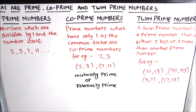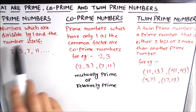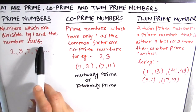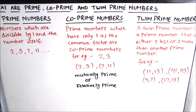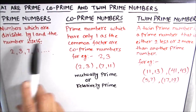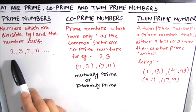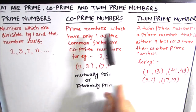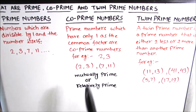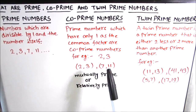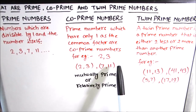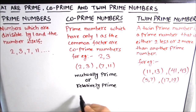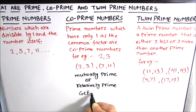Let's take a recap. Prime numbers are numbers divisible by 1 and the number itself — examples are 2, 3, 7, 11, and so on. Co-prime numbers are prime numbers that have a common factor of only 1 between them. In other words, the GCF or highest common factor of co-prime numbers is 1 — examples are 2 & 3, and 7 & 11.